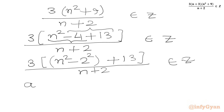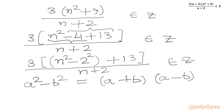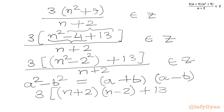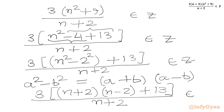We know the formula for the difference of two squares: a²-b² equals (a+b)(a-b). Using this formula, we can write 3 times (n+2)(n-2) plus 13 over (n+2) must be an integer.